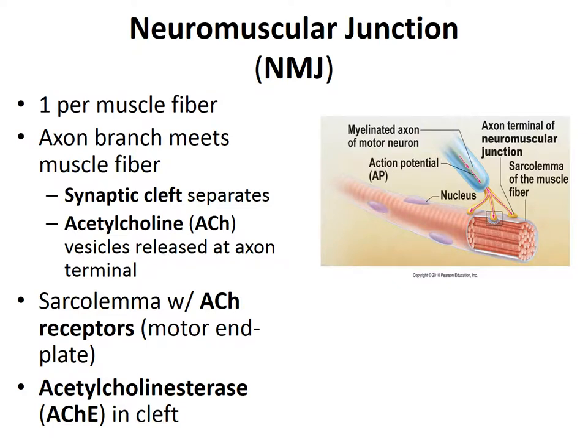Now that we've looked at the anatomy of the skeletal muscle, let's examine the physiology of skeletal muscle contraction. The first step is to look at the neuromuscular junction and nerve stimulation. Skeletal muscle cells are stimulated by a motor neuron. The axon of each motor neuron branches extensively to form numerous cellular extensions called synaptic terminals, which interact with the sarcolemma of the muscle fiber at a specialized site called the neuromuscular junction.